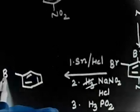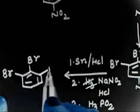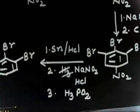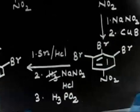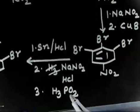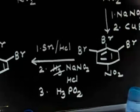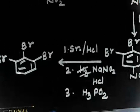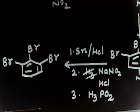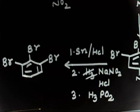Using H3PO2, the diazonium is replaced by hydrogen, giving 1,2,3-tribromobenzene — one bromine here, another bromine here, and a third bromine here. Remember: H3PO2 converts the diazonium cation (N2+) to a simple C–H bond — one hydrogen replaces the diazonium. This completes the conversion.